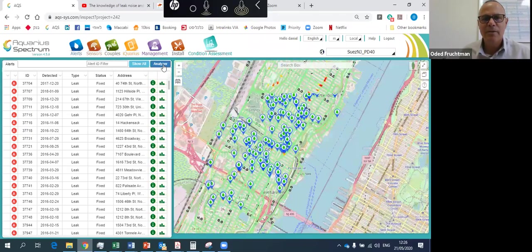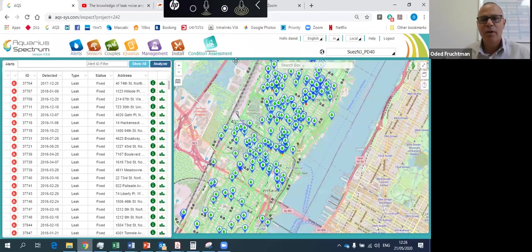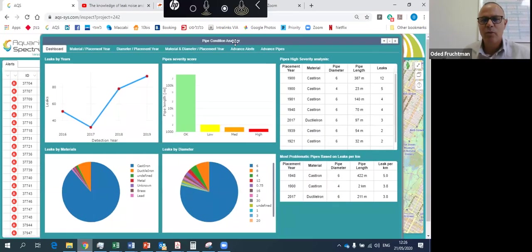If I click on the analyzer, it will give me this nice dashboard that will summarize what we're seeing. And you can see here the number of leaks repair back in 2016. And then in 2018, the customer installed Aquarius, and you can see the number of repair ramping up to 78 in 2018 to 93 in 2019.